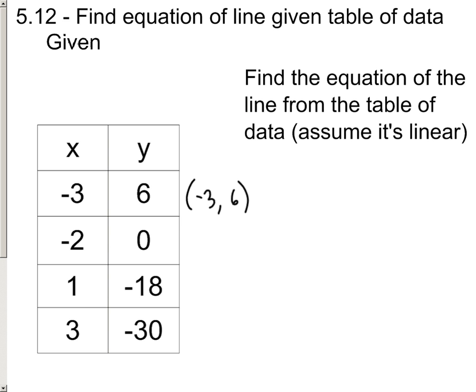There's negative 3, 6, because here's the X value and there's the Y value, negative 2, 0, 1 and negative 18, and then 3 and negative 30.